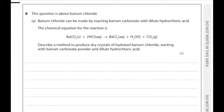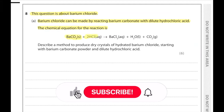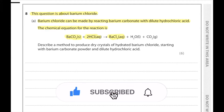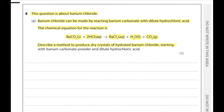Question 8. This question is about barium chloride. Barium chloride can be made by reacting barium carbonate with dilute hydrochloric acid. The chemical equation is: barium carbonate (solid) + hydrochloric acid → barium chloride + water + carbon dioxide. Describe a method to produce dry crystals of hydrated barium chloride starting with barium carbonate powder and dilute hydrochloric acid.